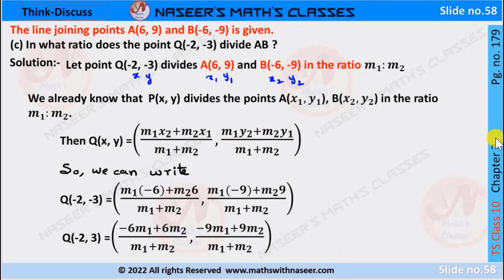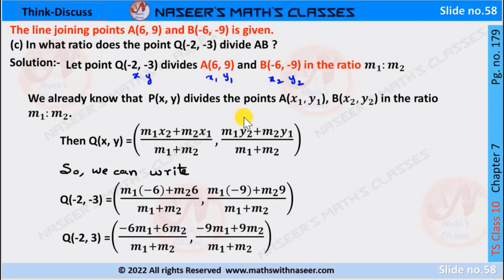Think and Discuss, page number 179, Chapter 7, Coordinate Geometry. The line joining points A(6,9) and B(−6,−9) is given. In what ratio does the point Q(−2,−3) divide AB? Let Q(−2,−3) divide A(6,9) and B(−6,−9) in the ratio M1:M2. We already know the section formula: Q(X,Y) = (M1·X2 + M2·X1)/(M1+M2), (M1·Y2 + M2·Y1)/(M1+M2). After substituting the values of X1, Y1, X2, Y2,